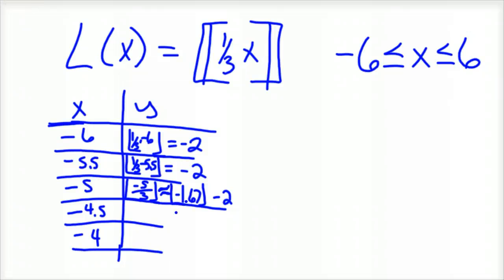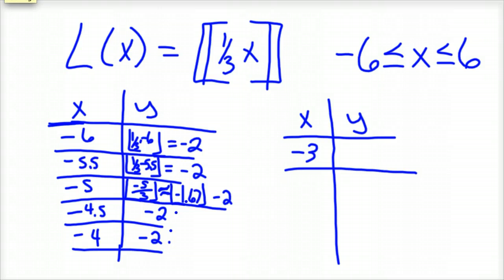We could kind of go dot, dot, dot, because hopefully that makes sense to you. 4.5 divided by 3 is negative 1 and 1 half, which would also be negative 2. Negative 4 divided by 3 is negative 1 and 1 third, which would be negative 2, because that's the number less than or equal to. And you keep rolling, and I'm just going to continue my table over here, until you get to negative 3, because then it changes. Because negative 3 divided by 3 is negative 1.